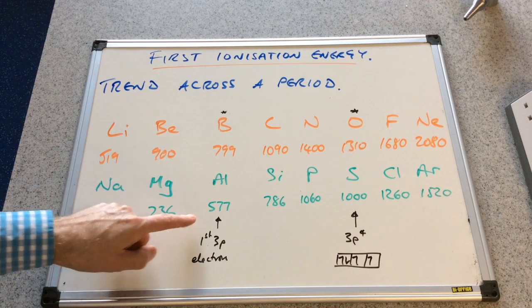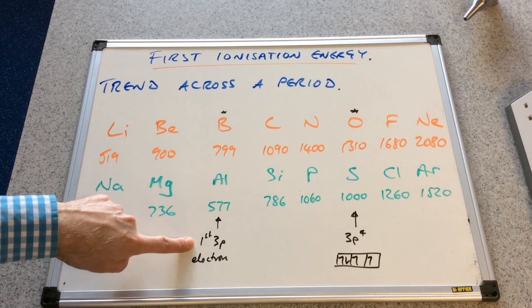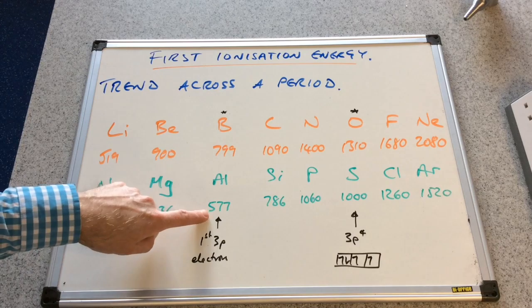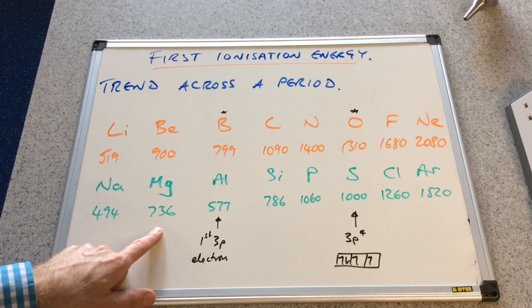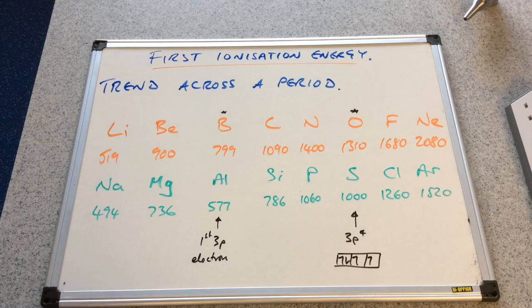So in the case of aluminium, the electron being removed is the first from the 3p subshell. Slightly higher in energy than 3s, which is where you took that one from. So slightly less energy needed to take that one out.